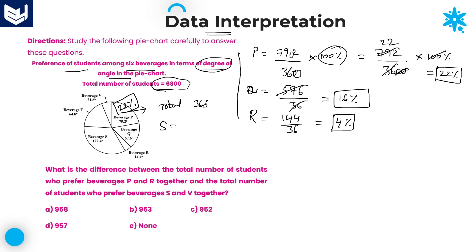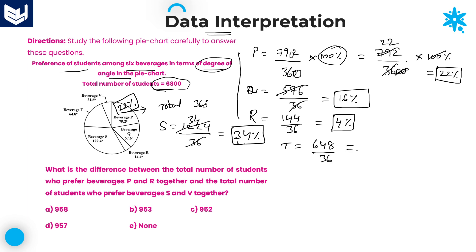S is equal to 1224 divided by 36. Cancelling with the 36 table gives 34 percentage. S is equal to 34 percentage. Next, T is equal to 648 divided by 36, which equals 18 percentage. T is equal to 18 percentage.